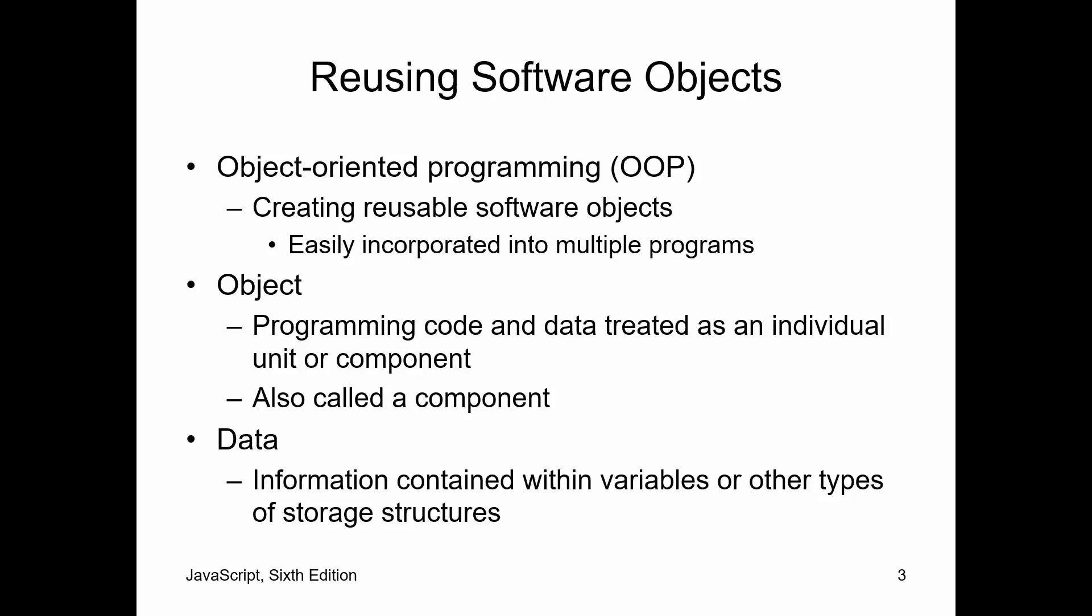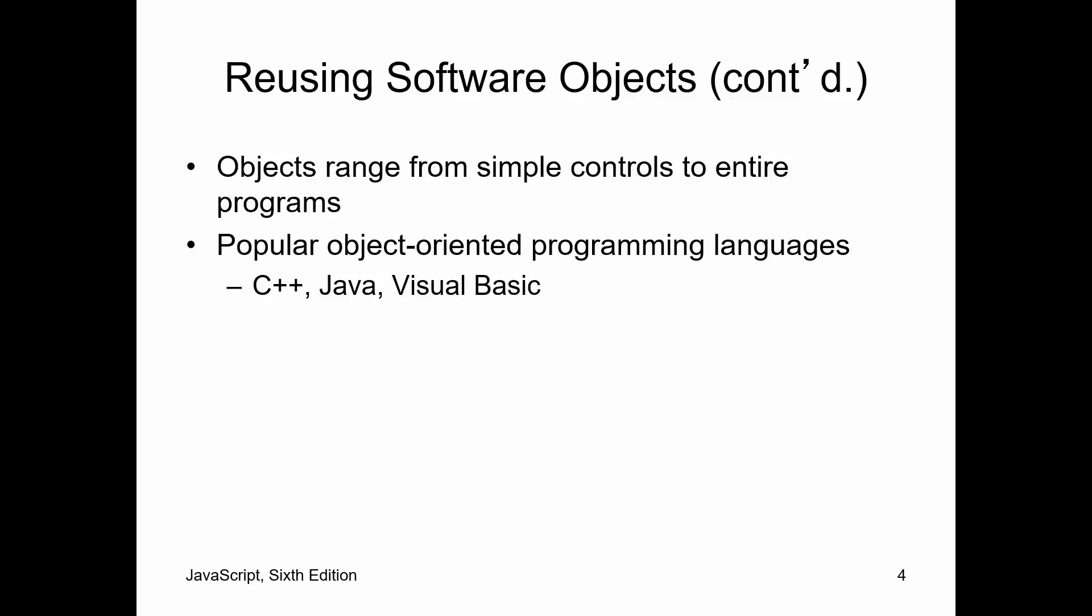An object is when you take the code and the data, and they're melded together and treated as one unit. Data are our variables. Objects can be simple and they can be very complex. Some of the better-known object-oriented programming languages are shown right here, and there are other ones too.